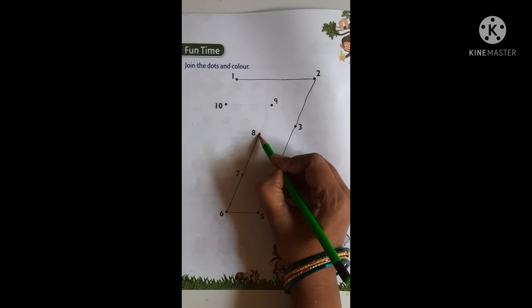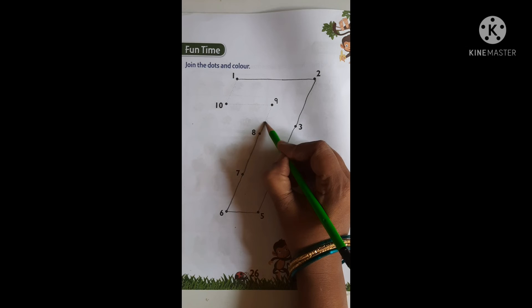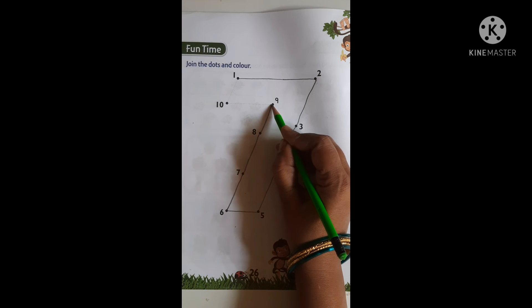After eight, nine. After nine, which number comes? One, zero, ten.